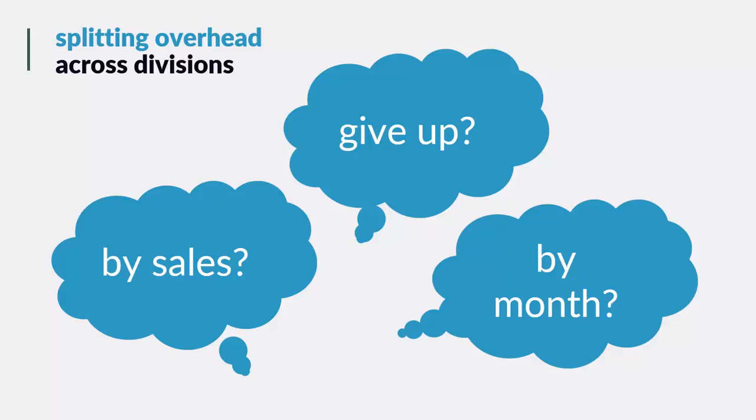If you split overhead by sales, chances are you're hiding divisions that aren't very profitable and making profitable divisions look less profitable than they are. If that's the way you're going to split overhead, it's not even really worth having a budget for each division — whatever percentage of sales that division generates, that's the percentage of overhead it's going to have to recover. It's simple, but it's not really accurate at all.